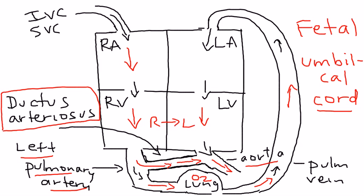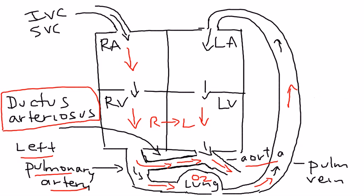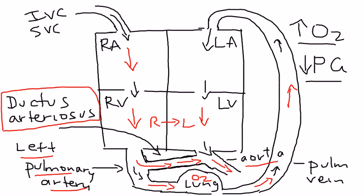Once the baby is born, significant changes occur. These include oxygen increasing after birth — the lungs are now mature — and a decrease in prostaglandins, which the fetus obtained from the mother but which now decrease after birth. These two things combined allow the ductus arteriosus to close, and when it closes, everything is normal.